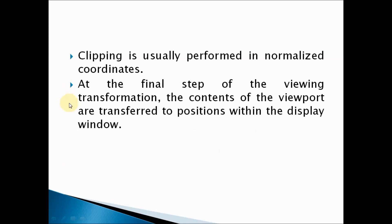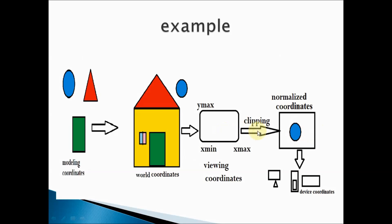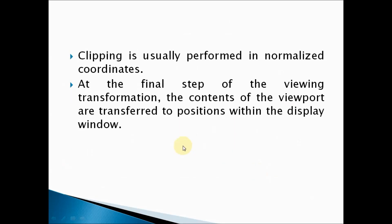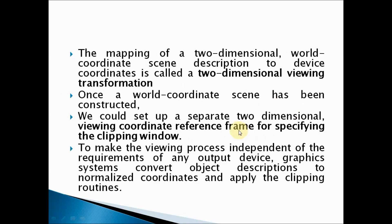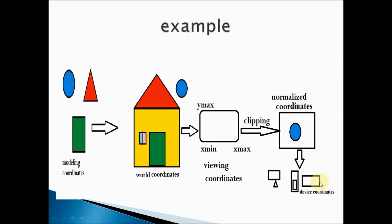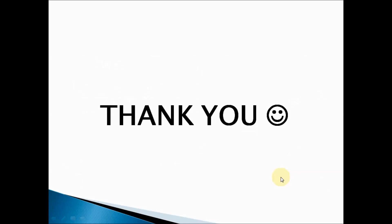In the final step, the contents of the viewport — which are mapped in normalized coordinates — are transferred to the display window. The display window can differ across devices: it may be a computer display, a mobile display, or a tablet display. This final transfer completes the two-dimensional viewing pipeline.